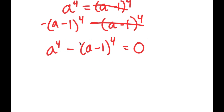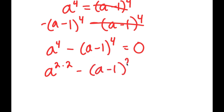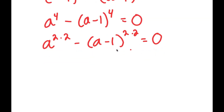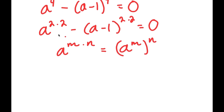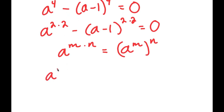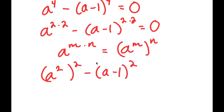Now I'm going to rewrite a to the power of 4 as a to the power of 2 times 2, and a minus 1 to the power of 4 as a minus 1 to the power of 2 times 2. Using the property a to the power of m times n equals a to the power of m to the power of n, I rewrite these as a squared to the power of 2, minus a minus 1 squared to the power of 2, equals 0.